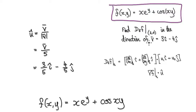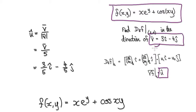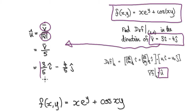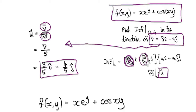We now need to know our unit vector. The direction vector (3, -4) is not a unit vector, so we convert it into a unit vector by dividing the vector by its magnitude. This gives us our unit vector.